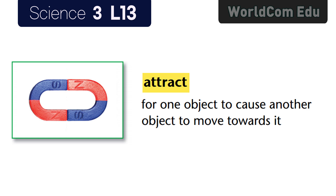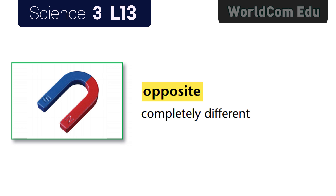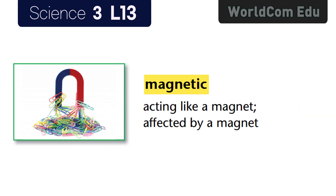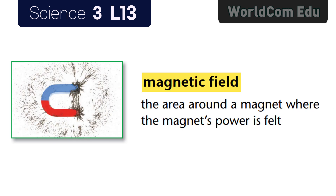Lesson 13: Exploring Magnets. Attract — for one object to cause another object to move towards it. Repel — for one object to cause another object to move away from it. Opposite — completely different. Magnetic — acting like a magnet, affected by a magnet. Magnetic field — the area around a magnet where the magnet's power is felt.